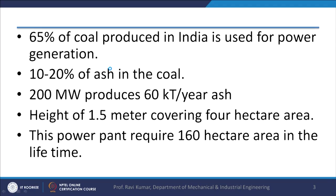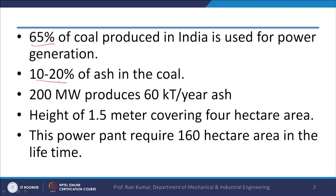Ash is the unburned part of the coal which remains in the power plant and has to be disposed. Disposal of ash is now a big issue in thermal power plants. 65 percent of coal production is used for power generation in India, approximately two-thirds. Coal may contain 10 to 20 percent ash; very high grade coal may contain 5 or 6 percent ash, but normally coal used in power plants contains 10 to 20 percent ash.